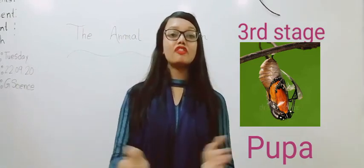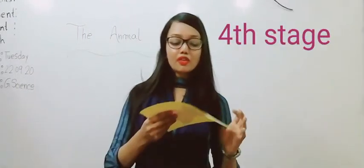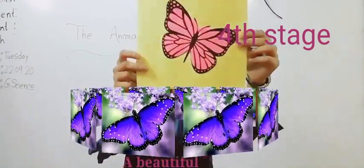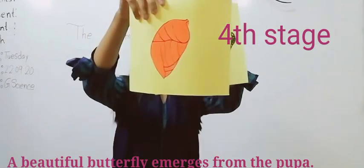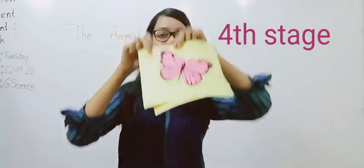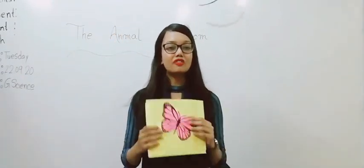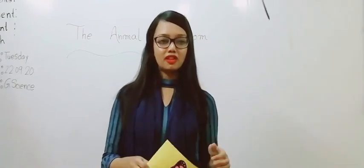And then, after 15 days, a beautiful adult butterfly emerges from the chrysalis. So these are the four stages of the life cycle of a butterfly.